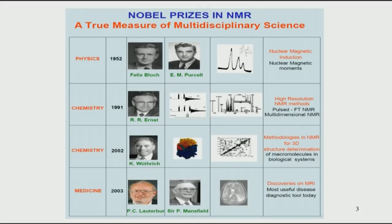Professor Kurt Wüthrich from ETH, Switzerland, was awarded the Nobel prize in 2002. His main contribution was developing new methodologies for structure determination of biomolecules. This is where NMR took off from being a tool of chemists to being a tool of structural biologists. It has seen phenomenal growth since then. We will look at how NMR can be used for structure determination of small biomolecules such as peptides and proteins in this course.